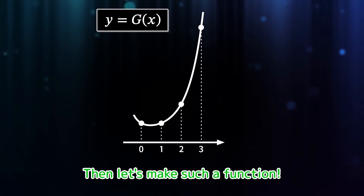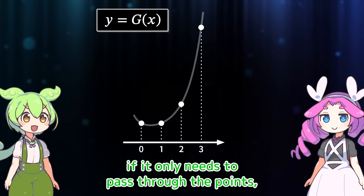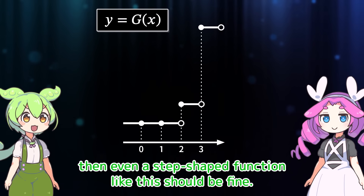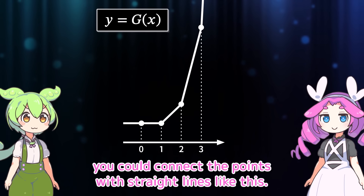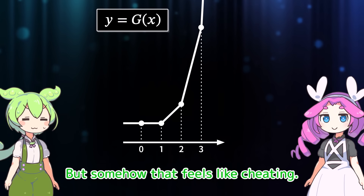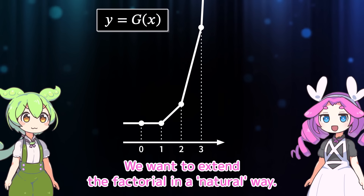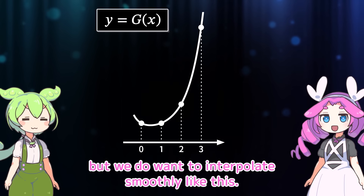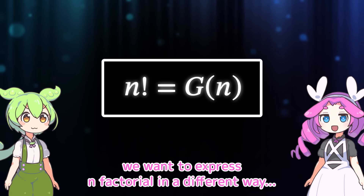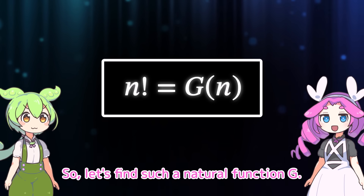Then let's make such a function. However, there can be infinitely many functions like that. If it only needs to pass through the points, then even a spike-shaped function should be fine. If you want the function to be continuous, you could connect the points with straight lines, but somehow that feels like cheating. We want to extend the factorial in a natural way — we want to interpolate smoothly. In other words, we want to express n factorial using a function g such that g of n represents n factorial.